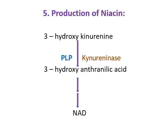The next function is production of niacin, which is a vitamin. Pyridoxal phosphate is required for niacin coenzyme synthesis from tryptophan. Specifically, the enzyme kynureninase, which converts 3-hydroxykynurenine and is required for the production of nicotinamide adenine dinucleotide, also requires pyridoxal phosphate as coenzyme.